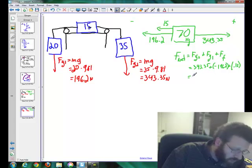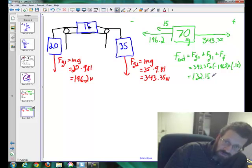Okay, so I'm going to add up all my negatives, take that out of my positive here, and I'll get a total force of 132.15 newtons. It's positive, so it must be towards the side that I identified as positive.